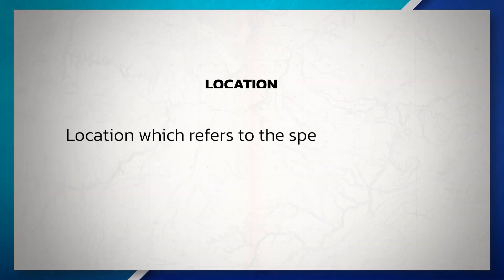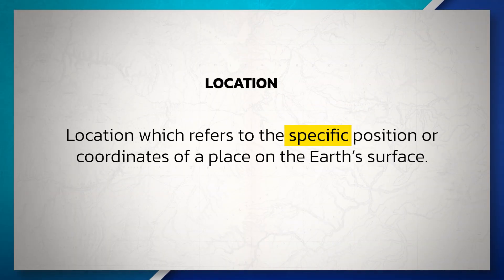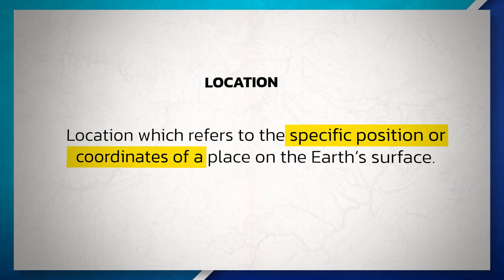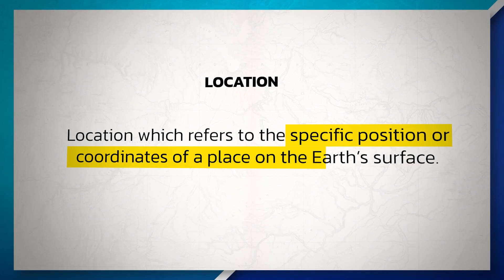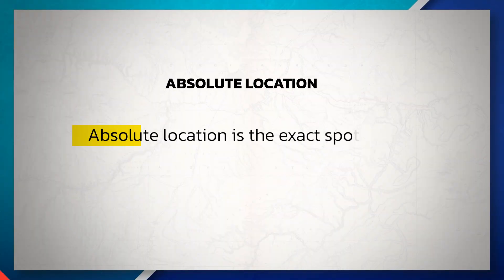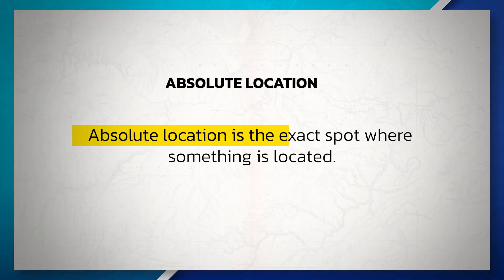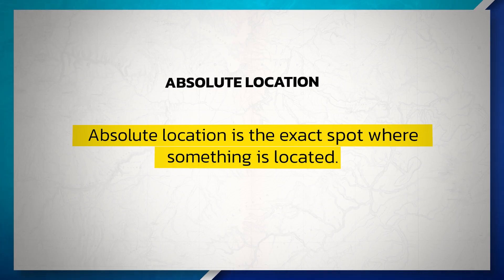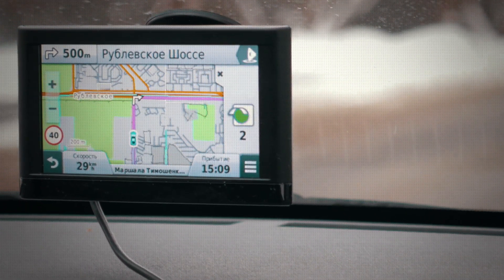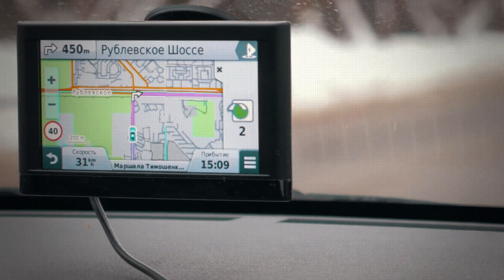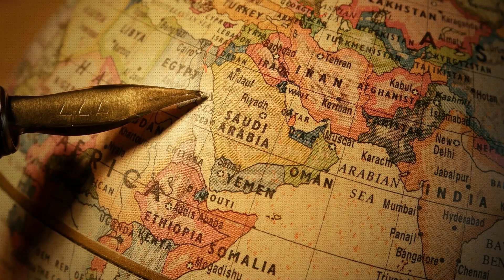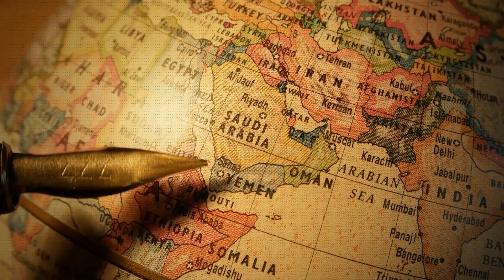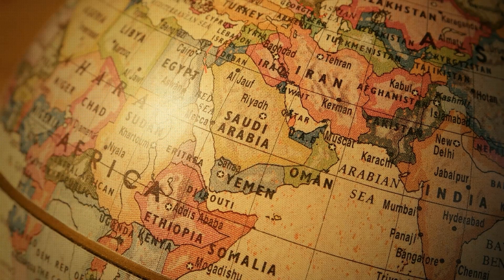Up next is location, which refers to the specific position or coordinates of a place on the Earth's surface. Generally, when we are talking about location, we are talking about absolute or relative location. Absolute location is the exact spot where something is located — for example, the GPS coordinates of a place. Oftentimes, we use longitude and latitude to determine the absolute location of a place.